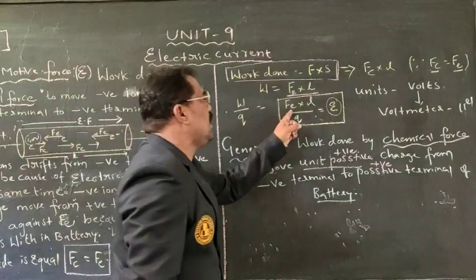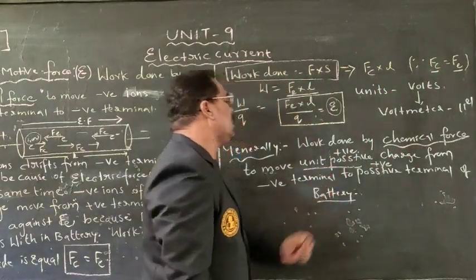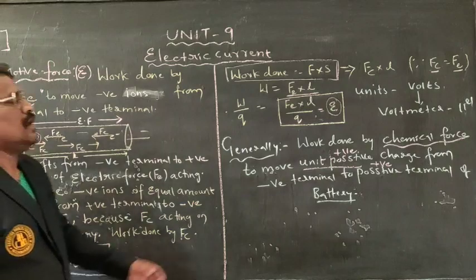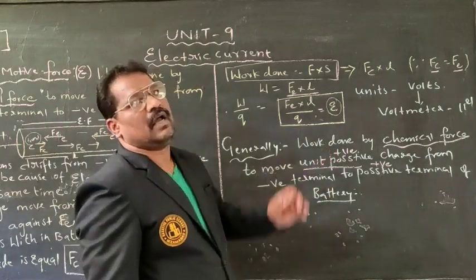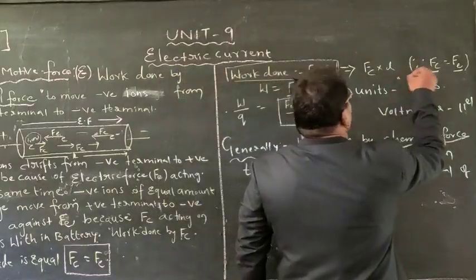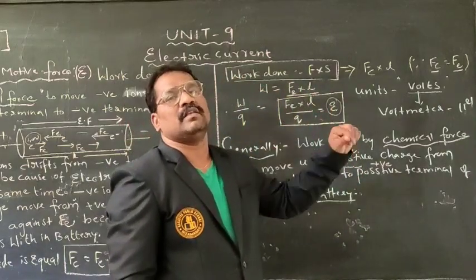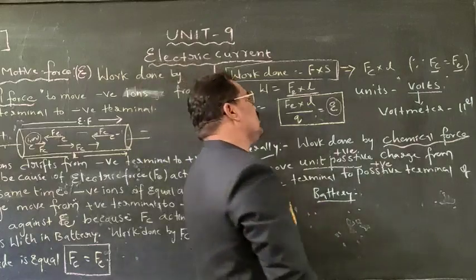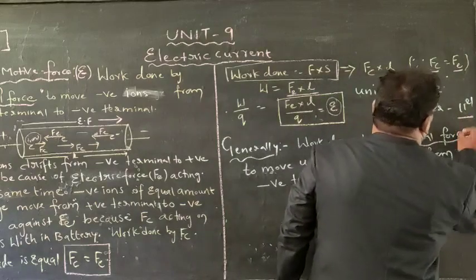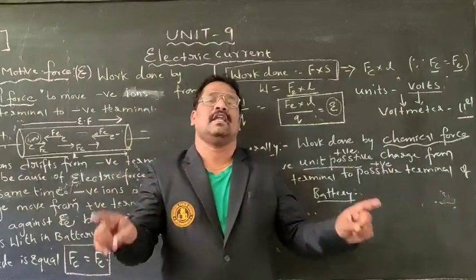A unit positive charge is moving from the negative terminal to the positive terminal within that particular battery — that is called electromotive force. The unit of electromotive force is Volts. Joule per Coulomb is equal to Volts. It is measured with one device called a voltmeter. We have to connect it in parallel within that particular component which we are connecting in a circuit.